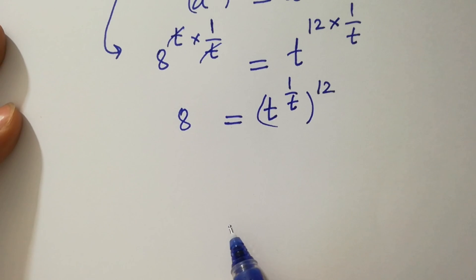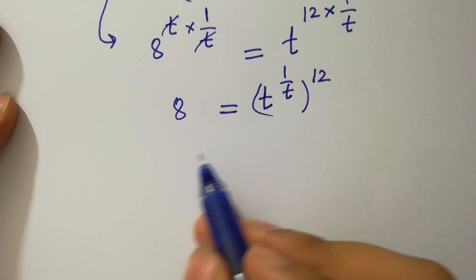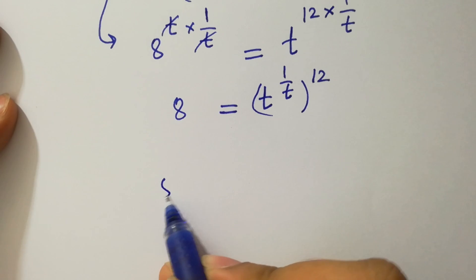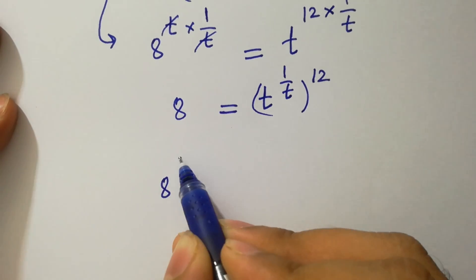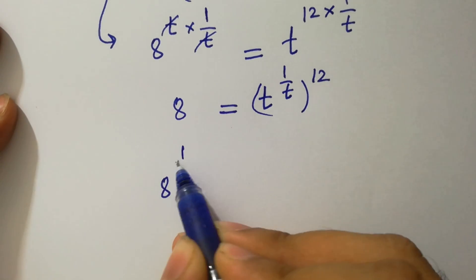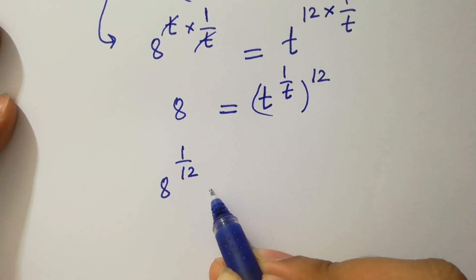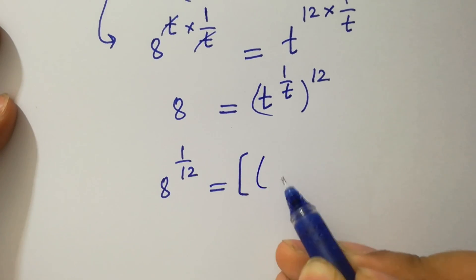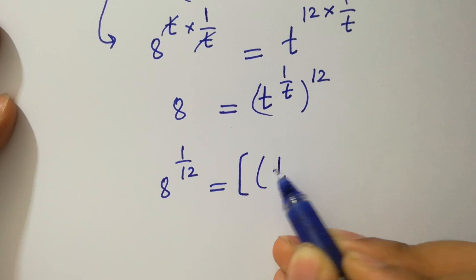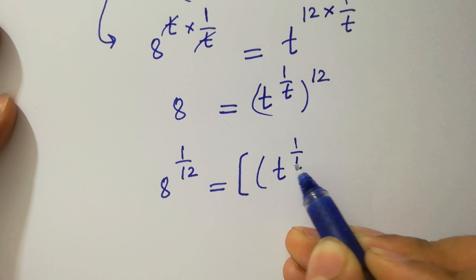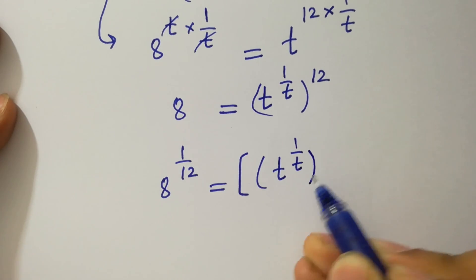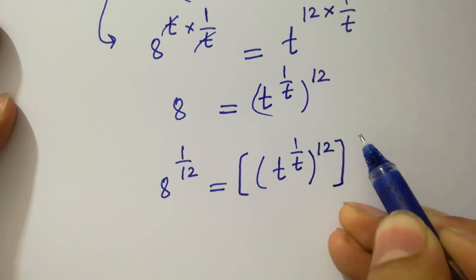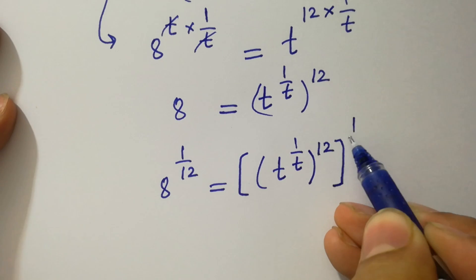Next, take power 1 over 12 on both sides. So 8 to the power 1 over 12 equals t to the power 1 over t, to the whole power 12, to the whole power 1 over 12.